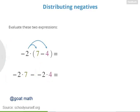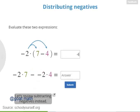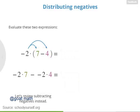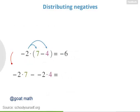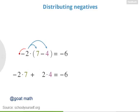Evaluate these two expressions to make sure they're the same, and be careful when subtracting the negative over here. So 7 minus 4 is 3, and negative 2 times 3 equals negative 6. Down here, negative 2 times 7 is negative 14, and negative 2 times 4 is negative 8. Now subtracting negative 8 is the same as adding positive 8. And sure enough, negative 14 plus 8 equals negative 6. So subtracting this negative is the same as adding a positive, and so by distributing a negative number, we turned subtraction into addition.